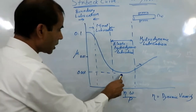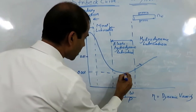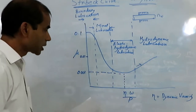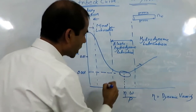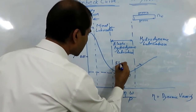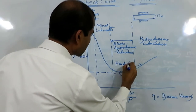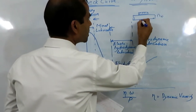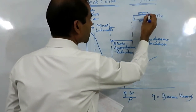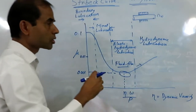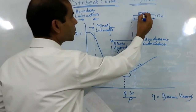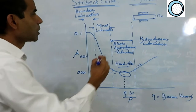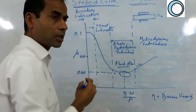We should know that for hydrodynamic conditions we will get the lowest coefficient of friction, because this is when fluid film lubrication is working. Fluid film means when the shaft is rotating, there is a film of liquid that separates the shaft from the bearing — there is total separation between the two — and therefore the coefficient of friction is extremely low. The coefficient of friction will be decided by the viscosity of this fluid.